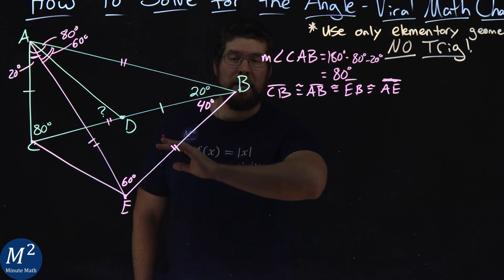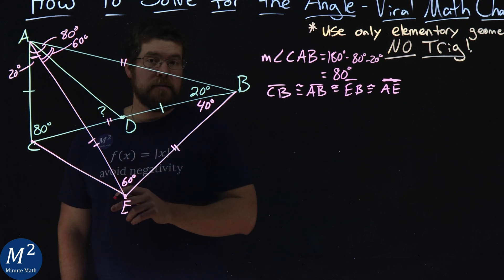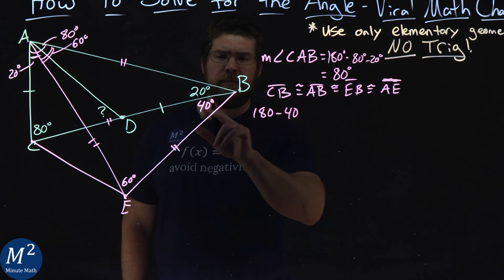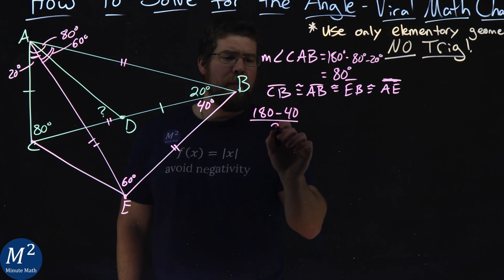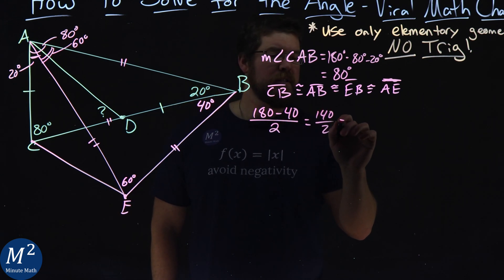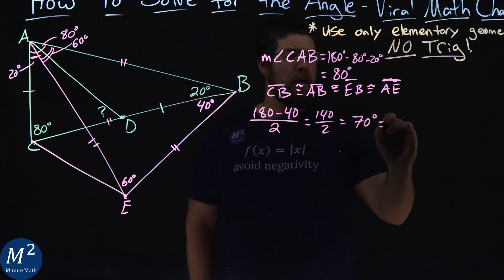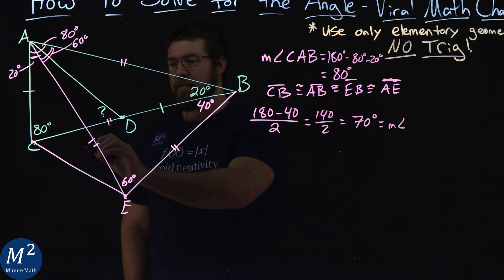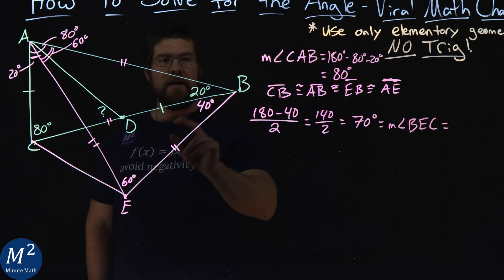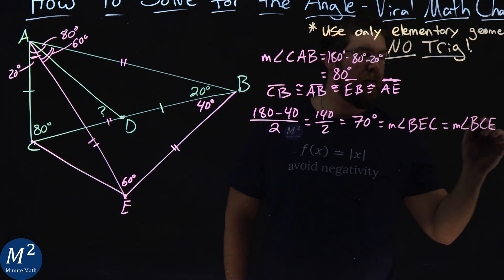In an isosceles triangle the base angles are congruent. So let's find what those base angles are. We take 180 degrees, subtract the 40-degree apex angle, then divide by 2: that gives 140 divided by 2, which equals 70 degrees. So angle BEC equals angle BCE equals 70 degrees.